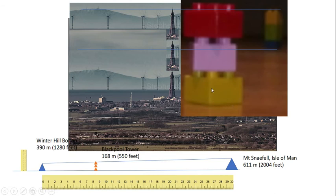In the experiment, we modeled Blackpool Tower and we modeled Mount Snaefell and we showed that the top of Mount Snaefell will be almost three Towers high and that's exactly what we see here.